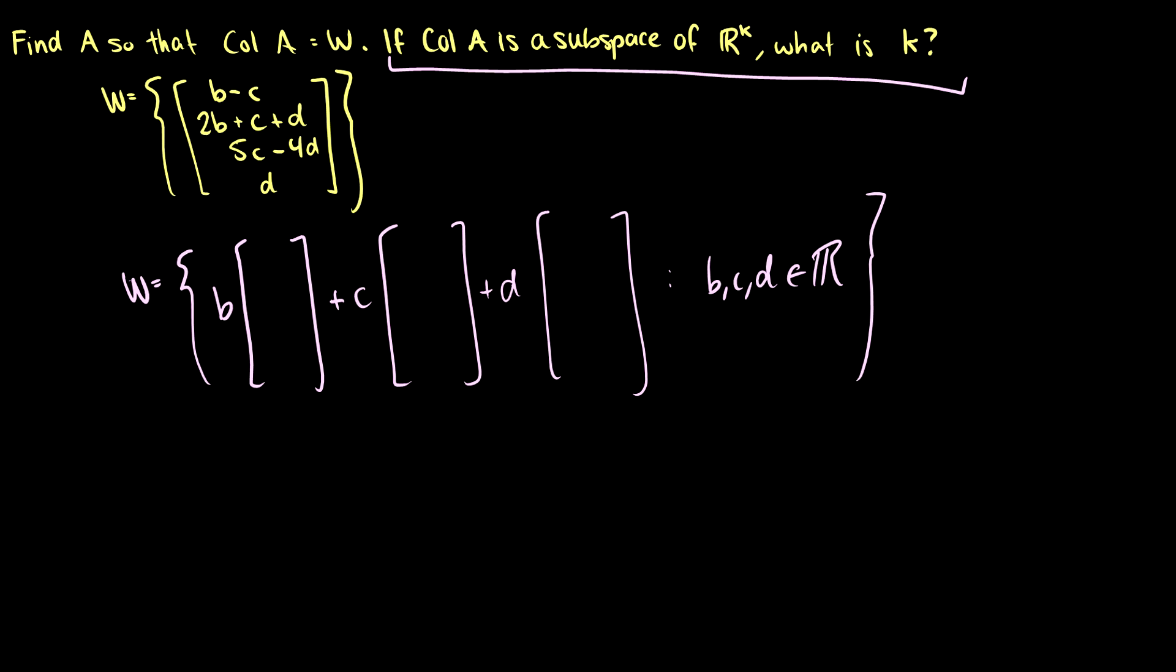Okay. So b. In the first row, we have b minus c. Then we have 2b plus c plus d, 5c minus 4d, and d. So there's 1b in the first row, 2bs in the second row. They don't appear in the third and fourth.